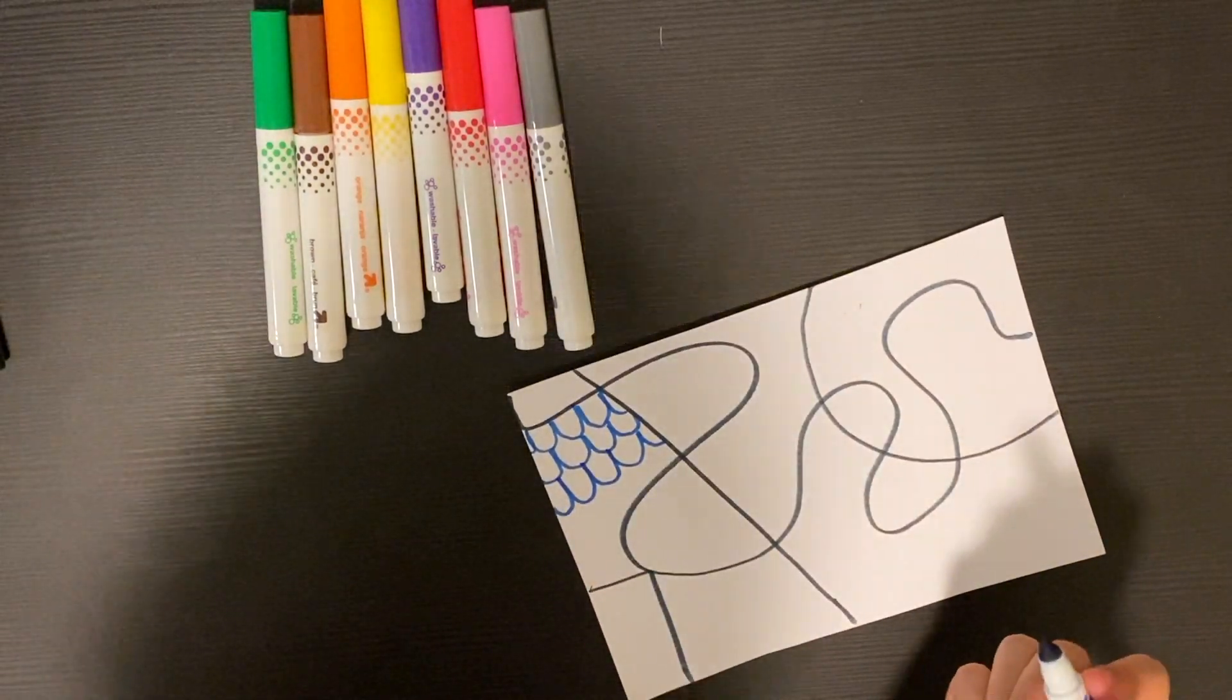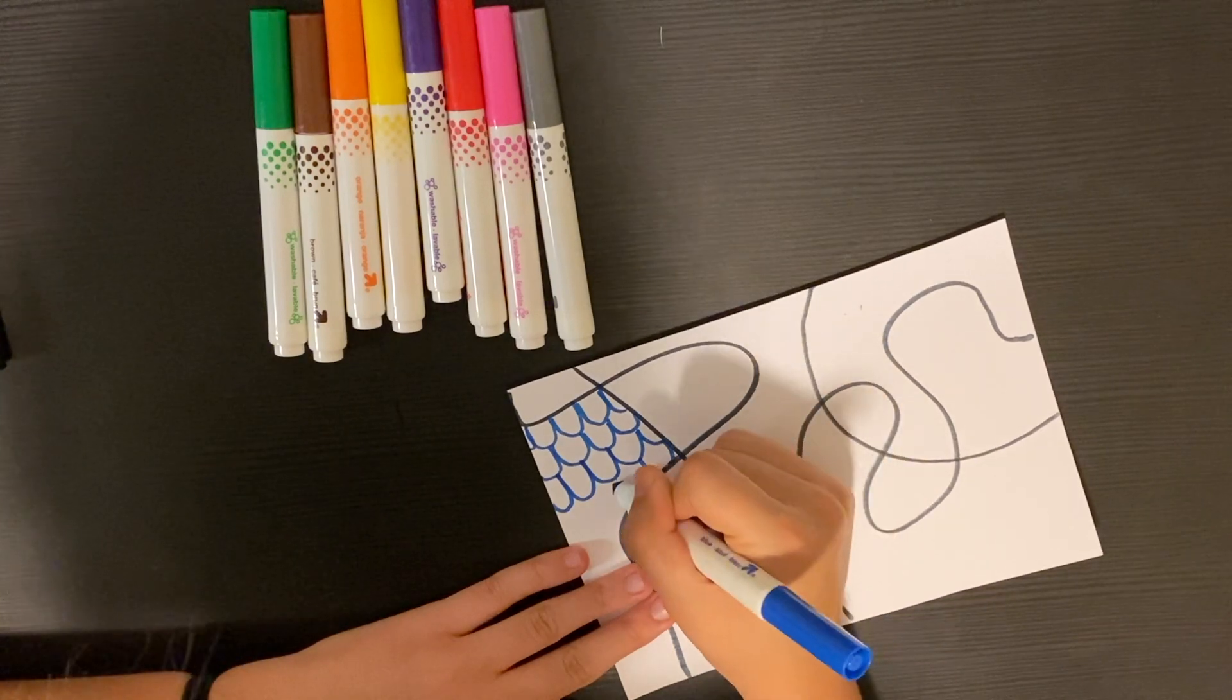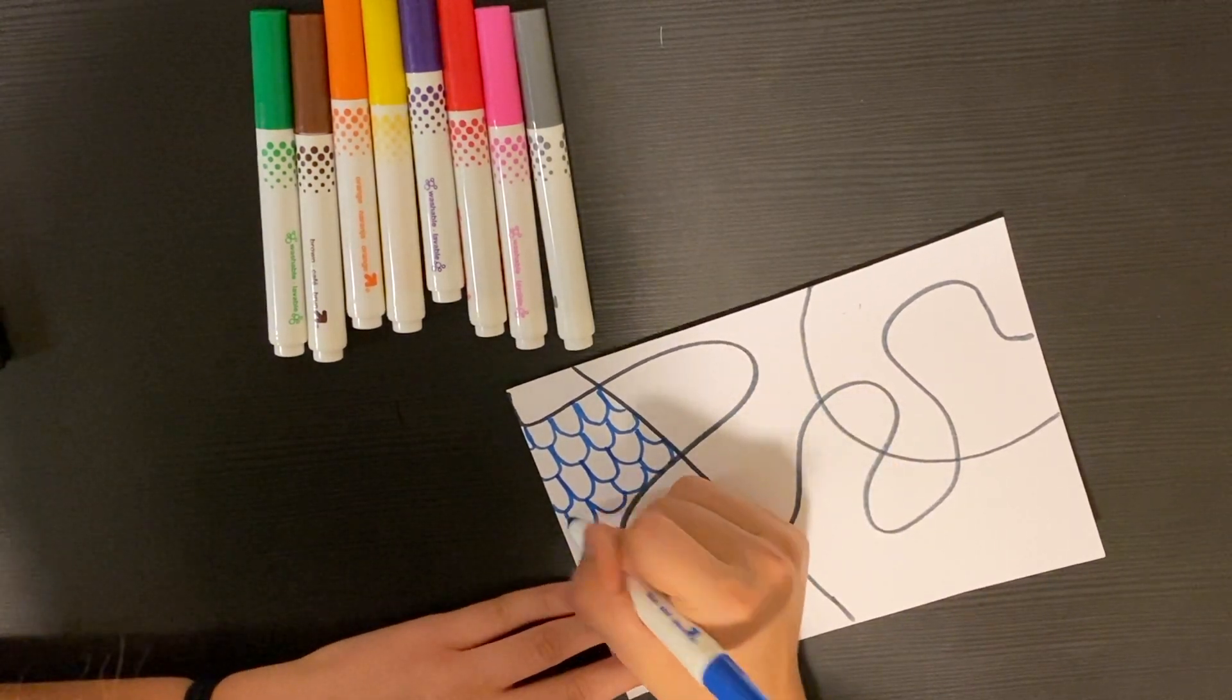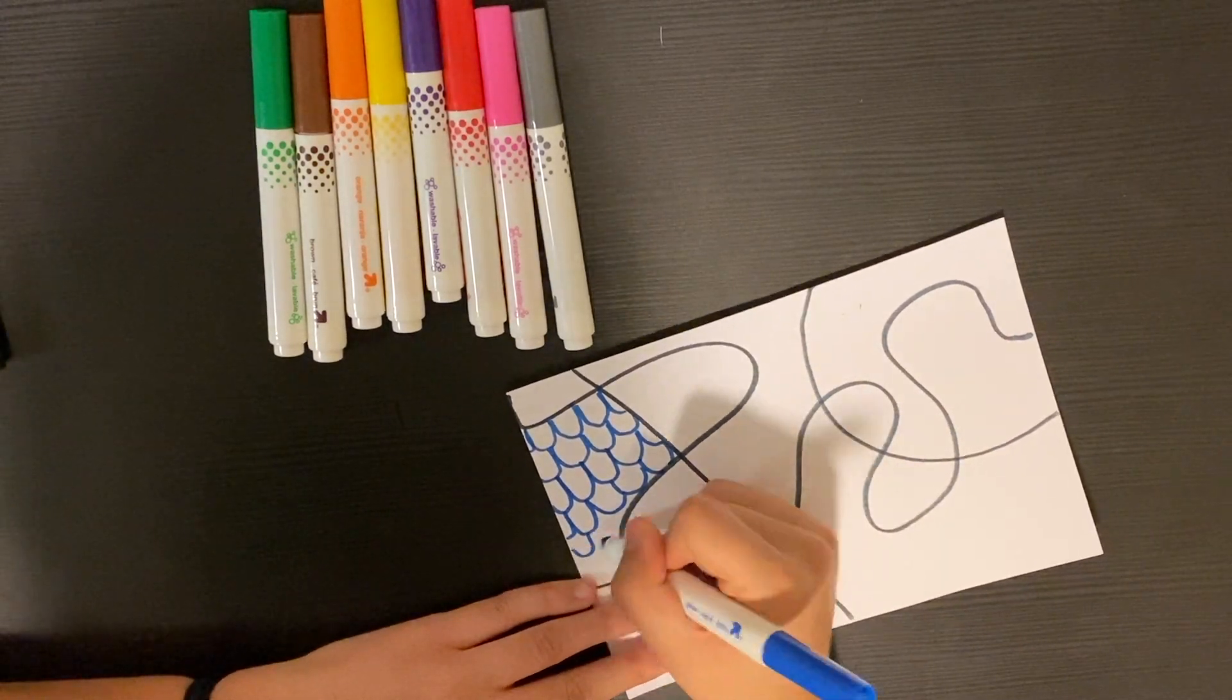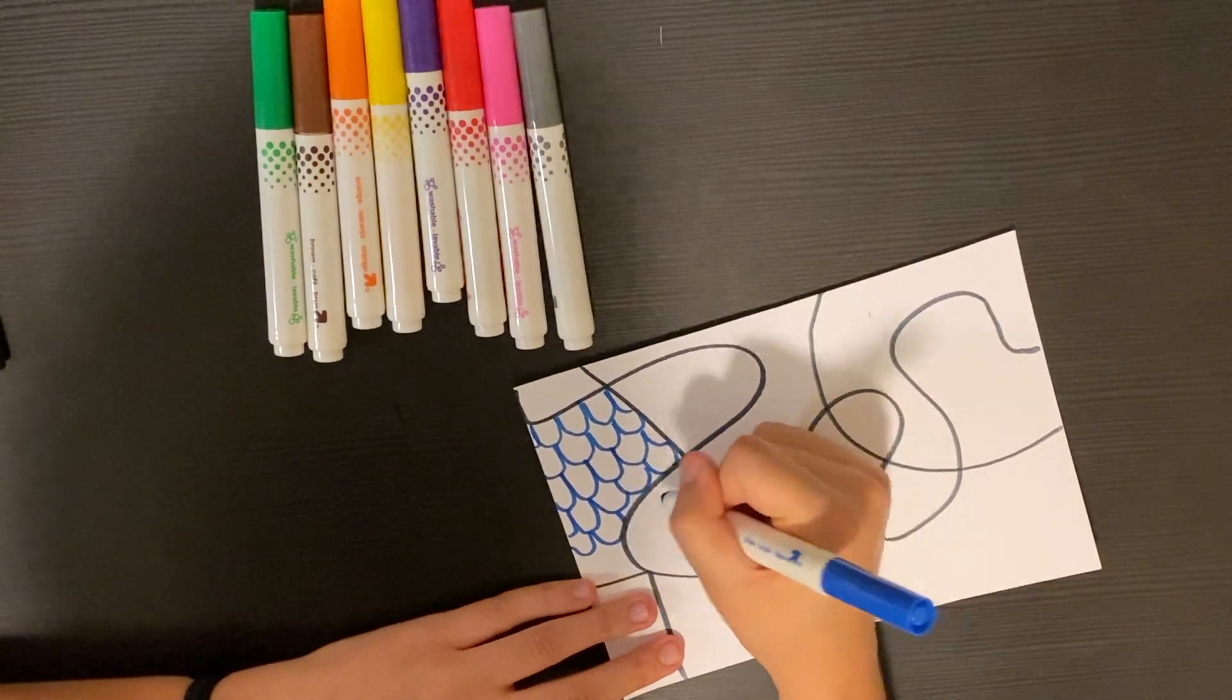Alrighty, so I'm on to the next step. I am just taking a marker and I'm starting my first pattern in this first section on my paper. Now if you're kind of stuck at the beginning and you don't really know where to start or what pattern to do, don't worry. Same thing happened to me when I first found out about Zentangle.